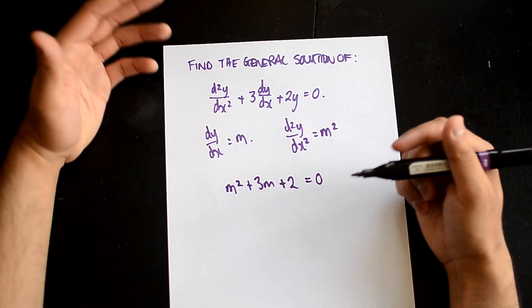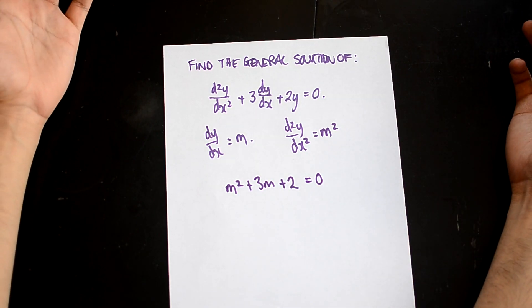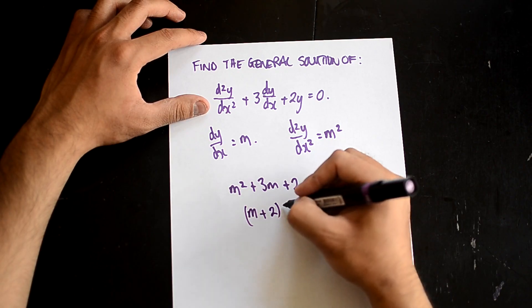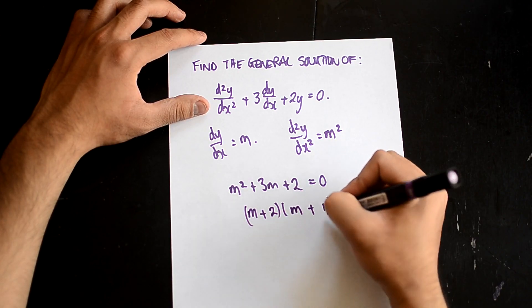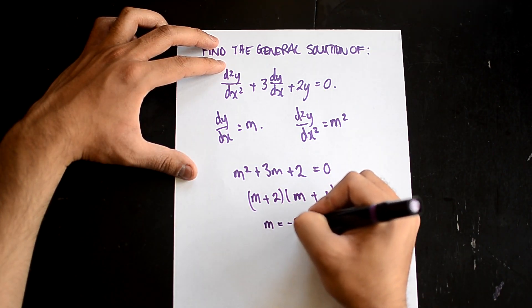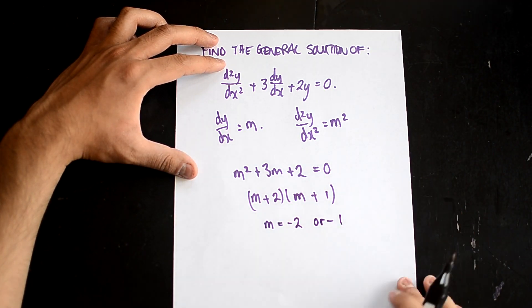Now we've got a very simple quadratic equation that we can solve. It's going to be (m + 2)(m + 1). So we know that m = -2 or m = -1.